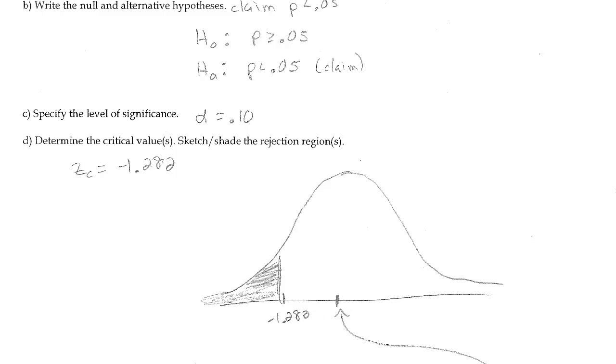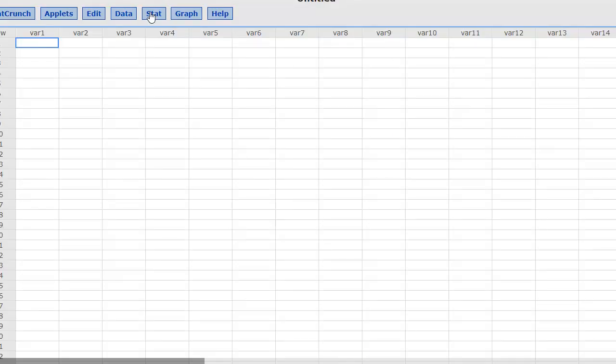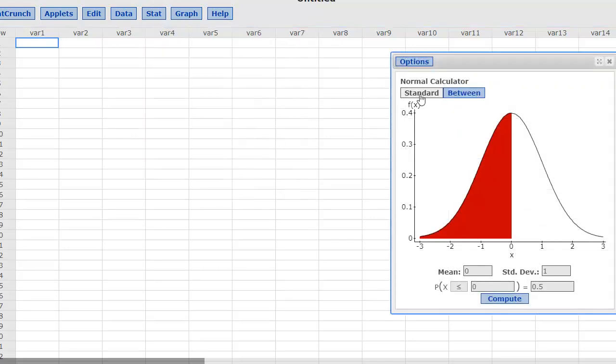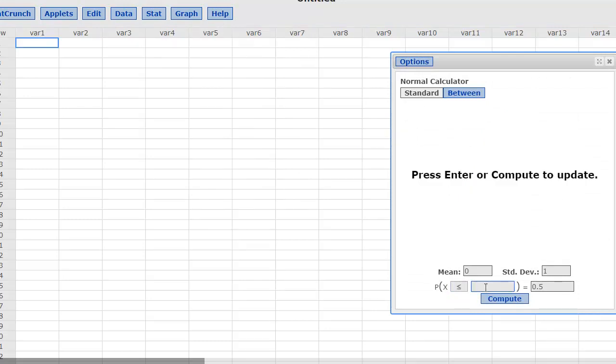How would we do that using StatCrunch? If I bring up StatCrunch, I'm using the standard normal variable. So I'm going to go to Calculator and pull up the normal calculator. I'll choose the standard option, and I'm looking in the left-tail.